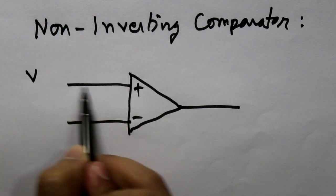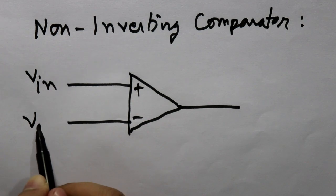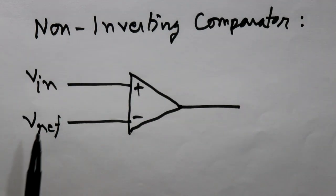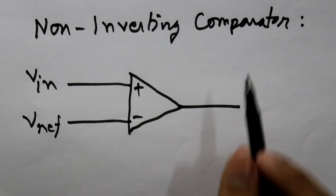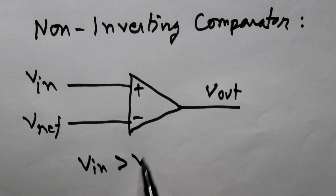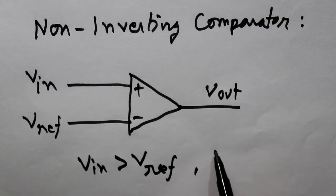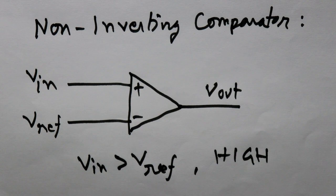In the non-inverting comparator, the input voltage should go to the non-inverting pin and we connect the reference voltage to the inverting input. If the input voltage is higher than the reference voltage then our output will be high. If V_in is greater than V_reference then our output will be high — so this is why it is called the non-inverting comparator. For the inverting comparator it is just the opposite.